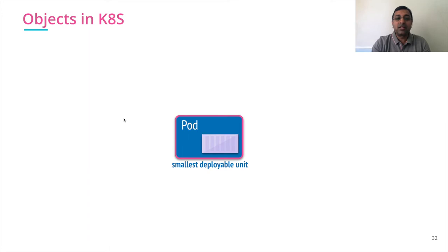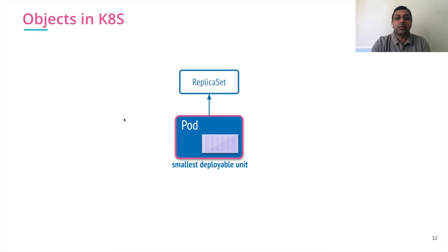The smallest deployable unit or smallest deployable object in the Kubernetes world is a pod. Pod houses containers. The abstraction on top of pod which provides you scalability is ReplicaSet.